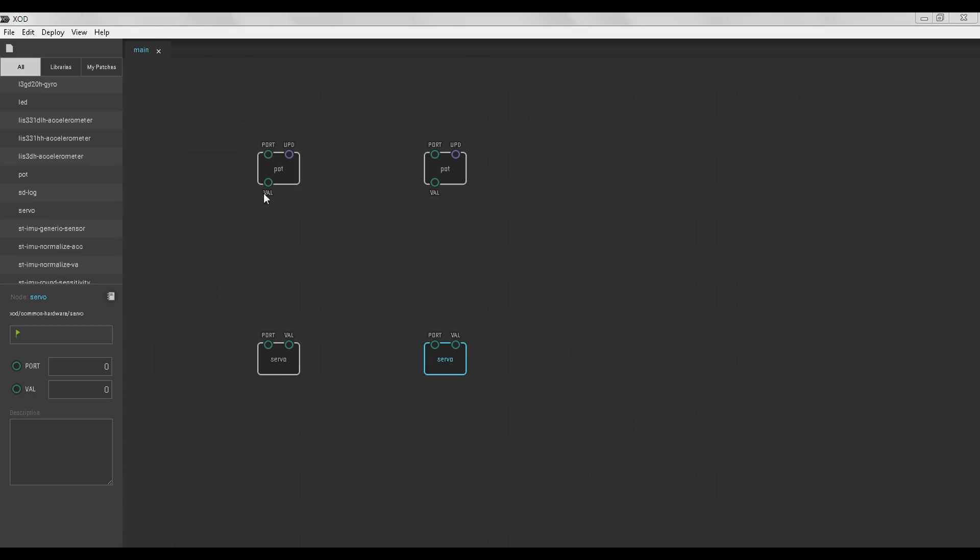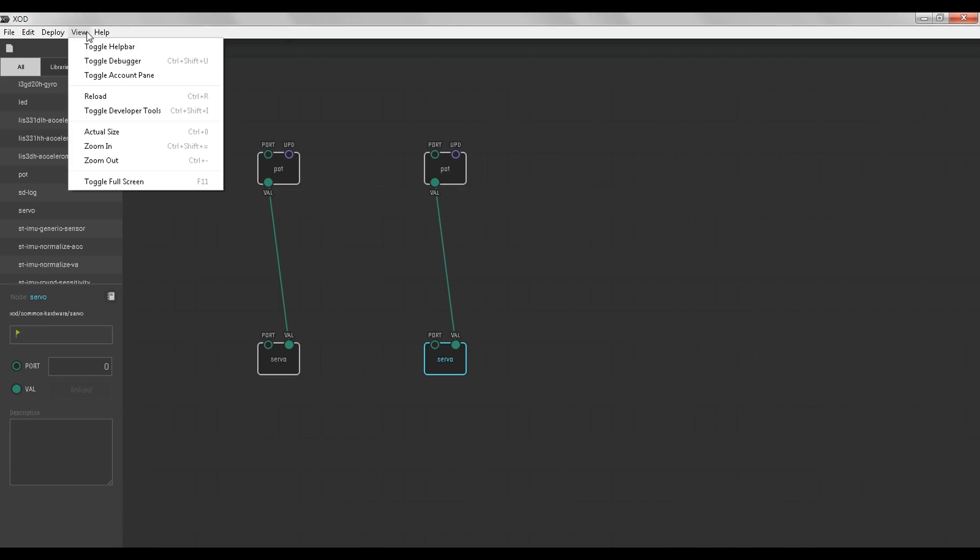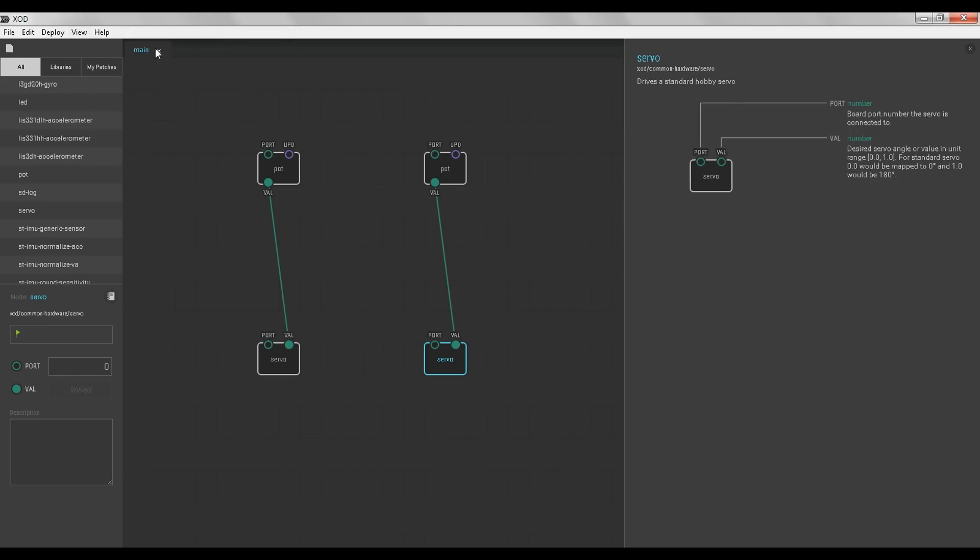And we're going to connect the output of the potentiometers to the servos by dragging a couple of wires. At this point I recommend you go to View Toggle Help Bar. This will give you a guide to what all the little input and output parts of each node are. For example, a servo node has 2 inputs, the output port number on the Arduino, and the value to send the servo. In this case the servo node accepts a value from 0 to 1 to represent the servo's rotation.